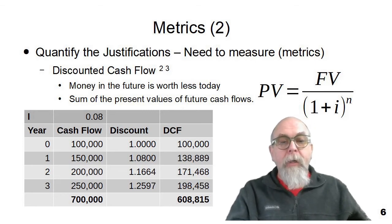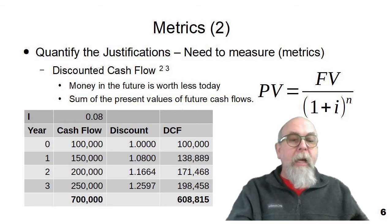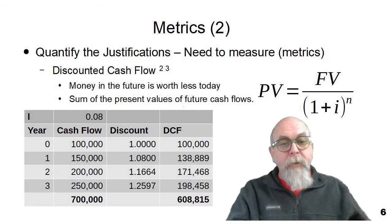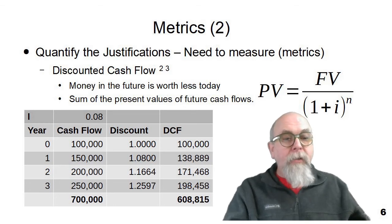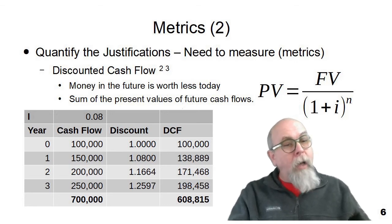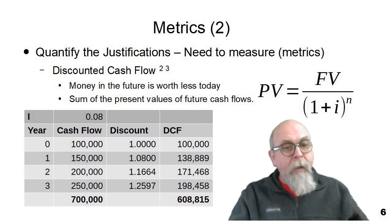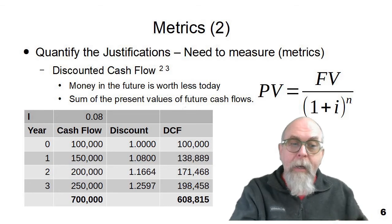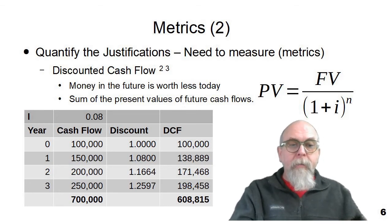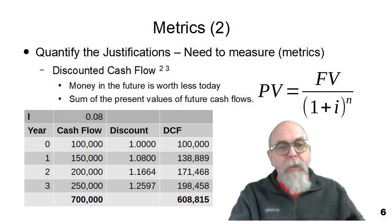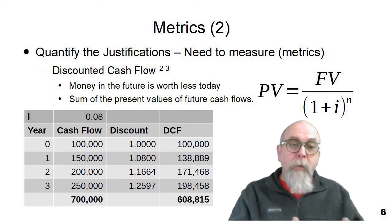Likewise, you can see that if we put $171,400 into an investment today at 8% in two years, it'll be worth $200,000. And if we put $198,000 and change in an investment at 8%, it'll be worth $250,000, growing over 50 grand in a three-year period. We add up those discounted cash flows and say that this project is going to cost us $700,000. But if we have $608,815 today in an investment at 8%, we'll have the cash flows to be able to pay $700,000 for the project.